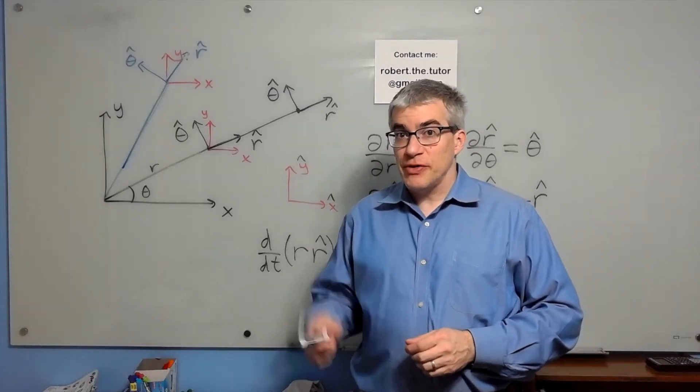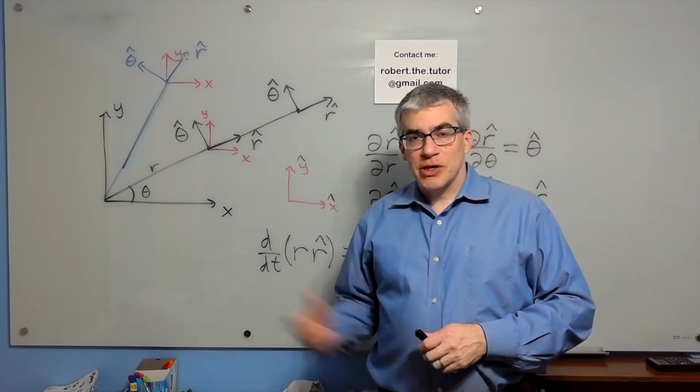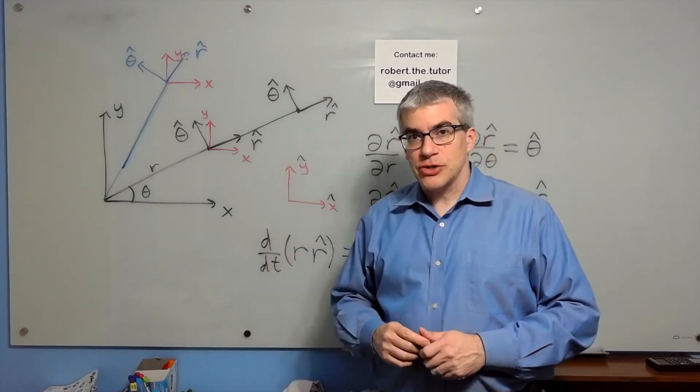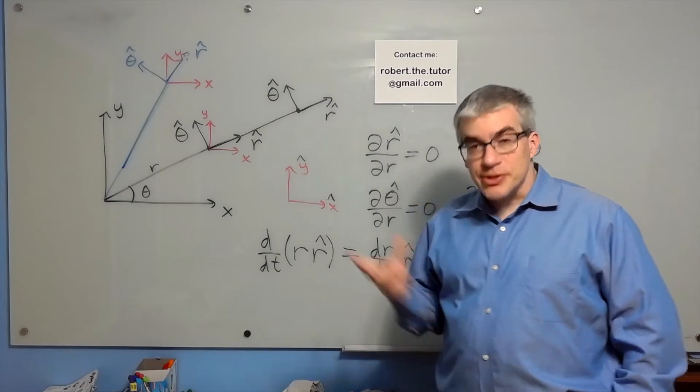Unit vectors can have derivatives. Now, x-hat and y-hat don't, because no matter what you do, x-hat points in the x-direction, y-hat points in the y-direction. But what if you're not in x-y coordinates? What if you're in r-theta coordinates, polar coordinates?